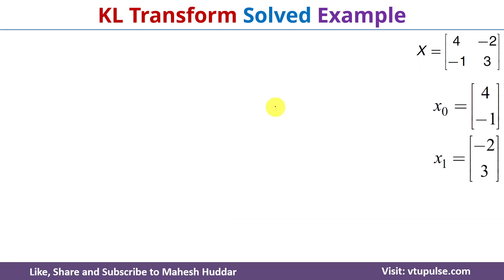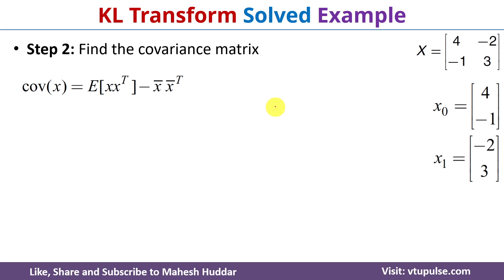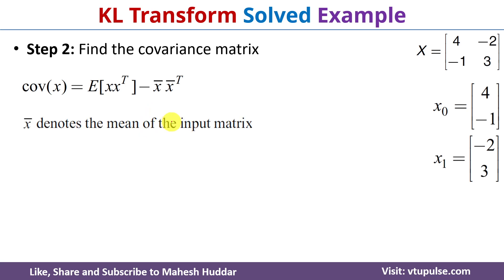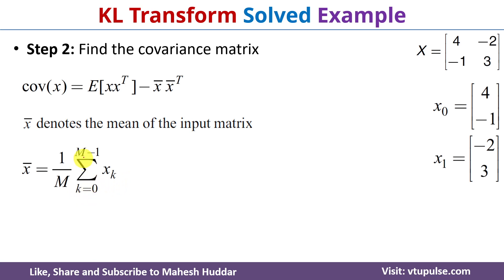Once you find the vectors, the next step is to find the covariance matrix. To find the covariance matrix we use the formula: covariance of x equals the expected value of x multiplied with transpose of x, minus x̄ multiplied with transpose of x̄, where x̄ denotes the mean of the input matrix. To find x̄ we use the formula: x̄ equals 1 divided by m, multiplied with the summation of x_k where k goes from 0 to m minus 1.